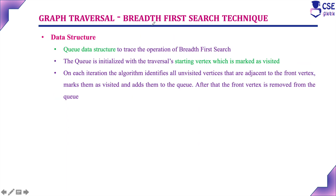To implement the Breadth First Search technique, the data structure we are going to use is a Queue. Whenever you find an unvisited vertex adjacent to the current vertex, it will be inserted into the Queue. Once a vertex has been visited and all its adjacent vertices are also included in the Queue, that vertex can be removed.